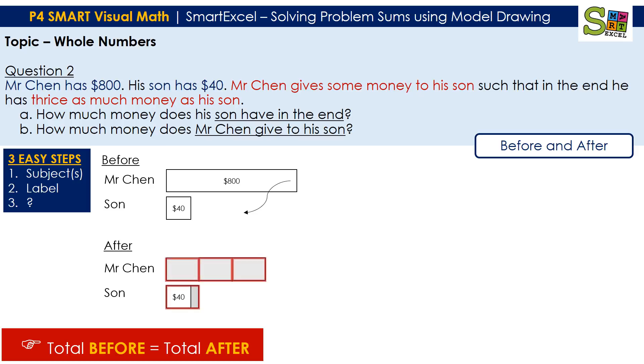Then they mention about three times. So we indicate that actually this is considered one unit for the son, and Mr. Chen, the after model is three units. And the question mark will be A, the one unit by itself, which is asking for what the son has in the end. And your B will be how much money does Mr. Chen transfer.